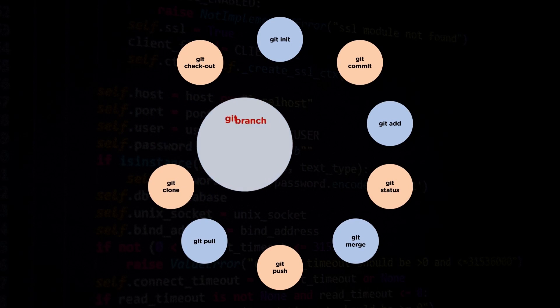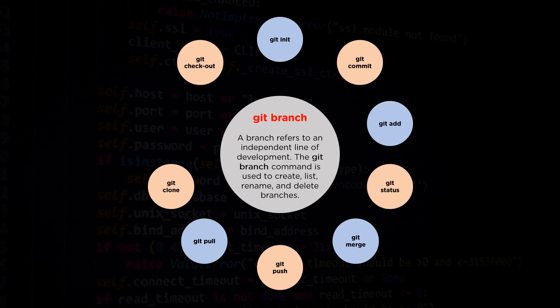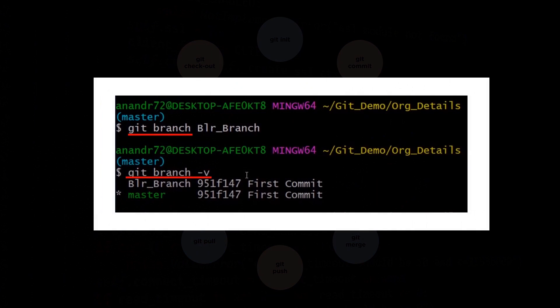Moving forth, the next command is the git branch command. The term branch refers to an independent line of development. The git branch command is used to create, list, rename, and delete branches. There are several ways the branch command may be used — to create a branch, find the list of branches, rename a branch, or delete a branch. Here we can see the first command is used to create a branch with the name blr branch, and the second command shows that we are now working on the blr branch.